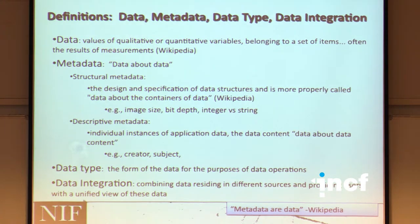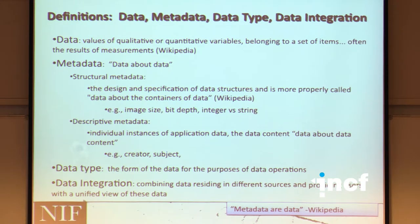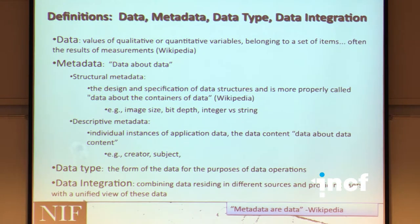We distinguish between data—qualitative or quantitative values, often results of measurements—and metadata, which is data about data. There's structural metadata describing design and specification of data structures (image size, bit depth, integer vs. string), and descriptive metadata covering keywords, creator, subject, and which agency funded the database. It's important to remember that metadata are data, because NIF sometimes gets criticized for having metadata rather than data—but metadata points to data and you can do a lot with it.